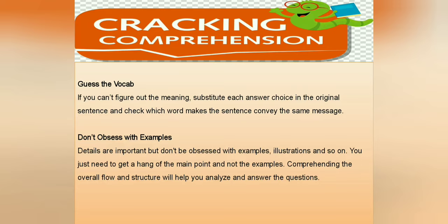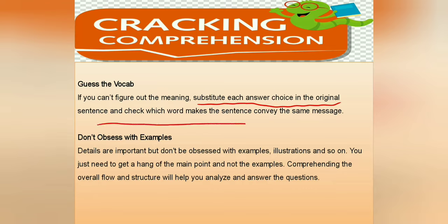Sometimes vocabulary words are asked that we haven't come across before. If we cannot figure out the meaning, we should substitute each answer choice into the original sentence and check which word makes the sentence convey the same message. First understand the context by reading a few lines before and after that sentence, then replace the unknown word with each option and see which one makes the same sense — that word is our answer. Also, do not be obsessed with examples; focus on the main point and overall flow of the passage.